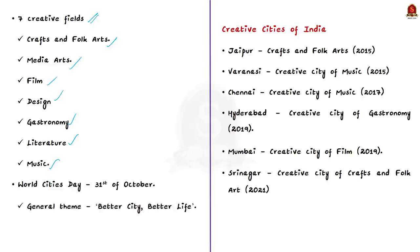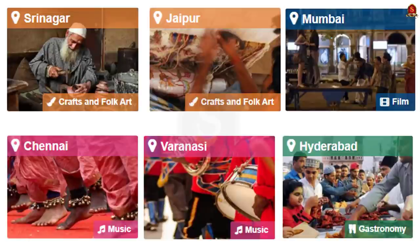Every year there is also a World Cities Day, celebrated on 31st of October, and the general theme of World Cities Day is 'Better City, Better Life.' Coming to India, six cities are under this network as of now under various categories. For example, Varanasi is under the music category and Jaipur under crafts and folk arts — both received this recognition in 2015.